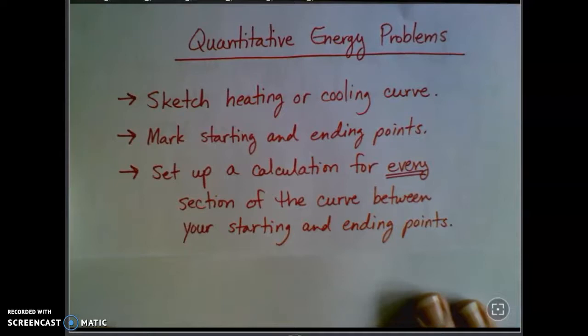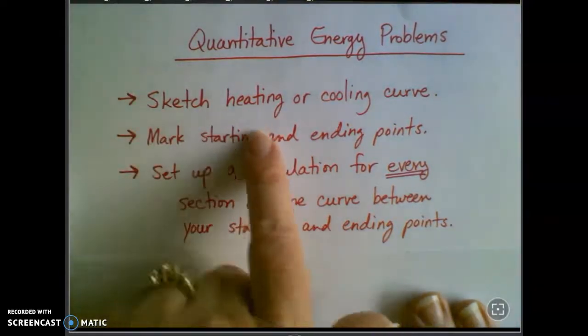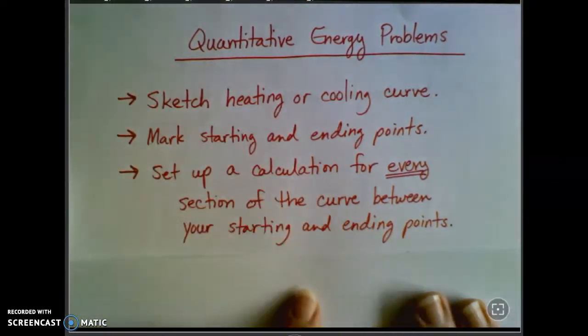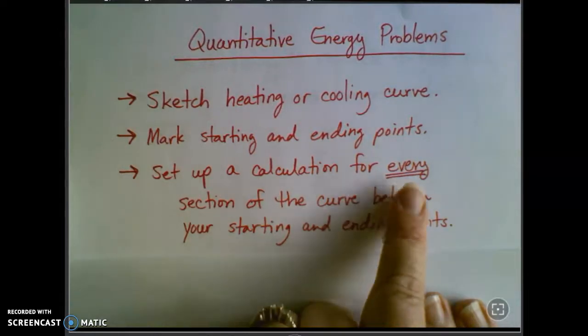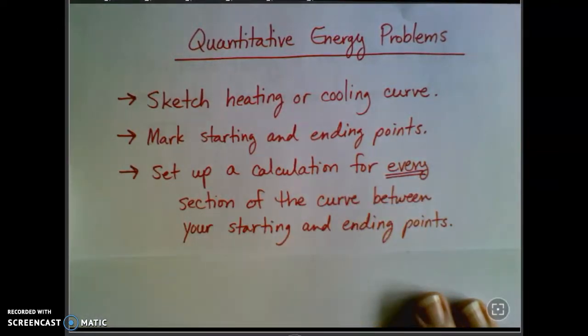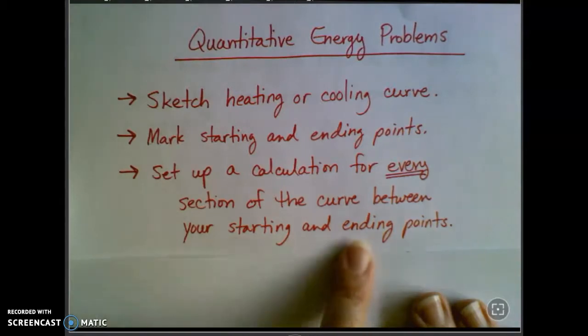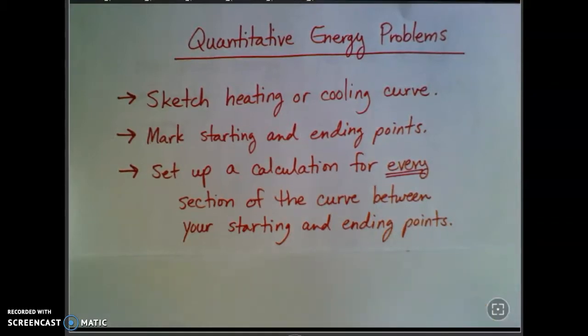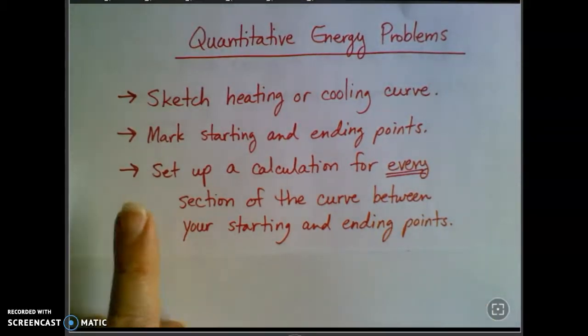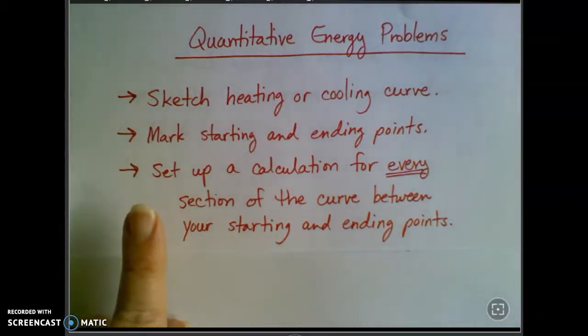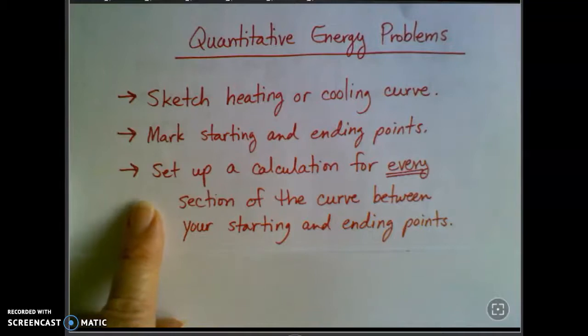The last thing, the important thing, why you have to do these two steps, is that tells you how to set up your calculations. For every section of the graph of the curve that you have between your starting and your ending points, you're going to have to do a separate calculation and then combine those. This is where people have trouble. They try to do one calculation and some of them are one calculation problems, but very often you'll have to go through more than one calculation to figure this out.